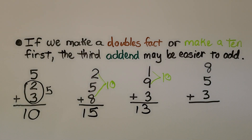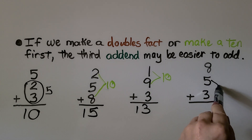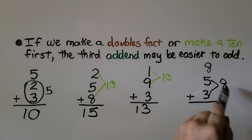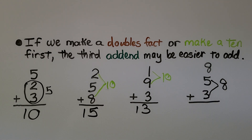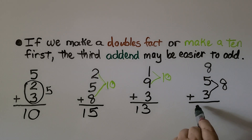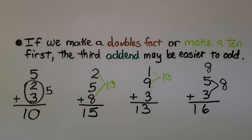What about eight plus five plus three? If we add the five and the three together, that makes eight, giving us the doubles fact eight plus eight, which equals sixteen. So if we make a doubles fact or make a ten first, the third addend may be easier to add.